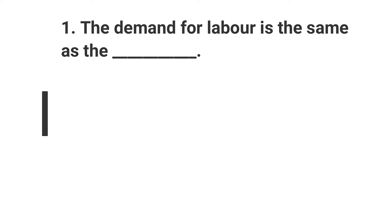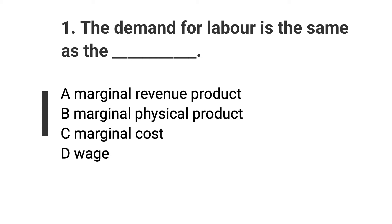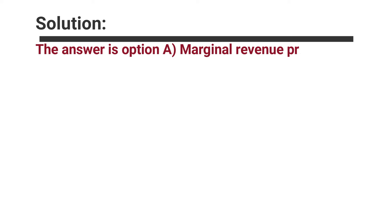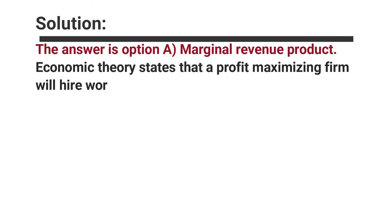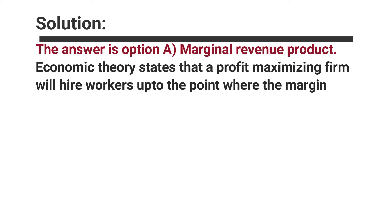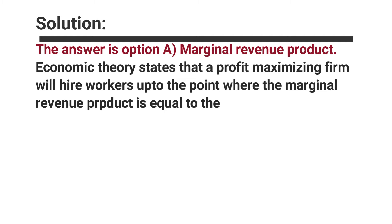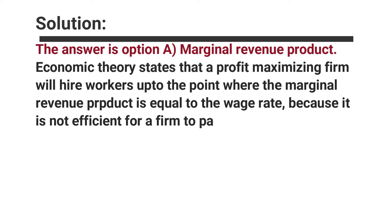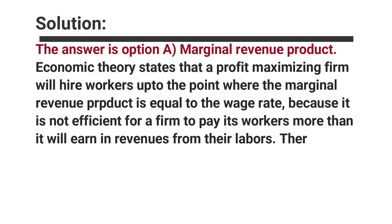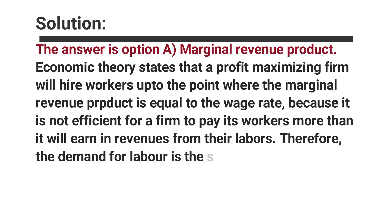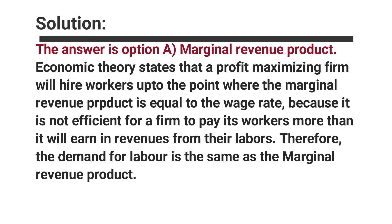Question number one: The demand for labor is the same as the dash. Options are A. Marginal Revenue Product, B. Marginal Physical Product, C. Marginal Cost, D. — The answer is option A, Marginal Revenue Product. Economic theory states that a profit-maximizing firm will hire workers up to the point where the marginal revenue product is equal to the wage rate, because it is not efficient for a firm to pay its workers more than it will earn in revenues from their labor. Therefore, demand for labor is the same as the marginal revenue product.